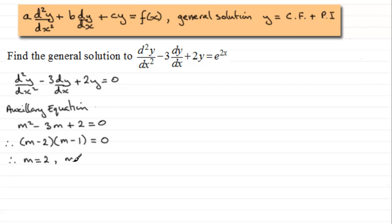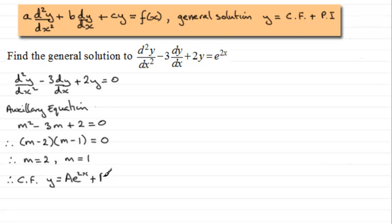We can solve this — we get two real and different roots: m equals 2 and m equals 1. In this case, our complementary function CF is going to be of the form y equals a constant A times e to the power 2x, plus another constant B times e to the power x. Now we get on to the reason why this is a special case when we look at our particular integral.